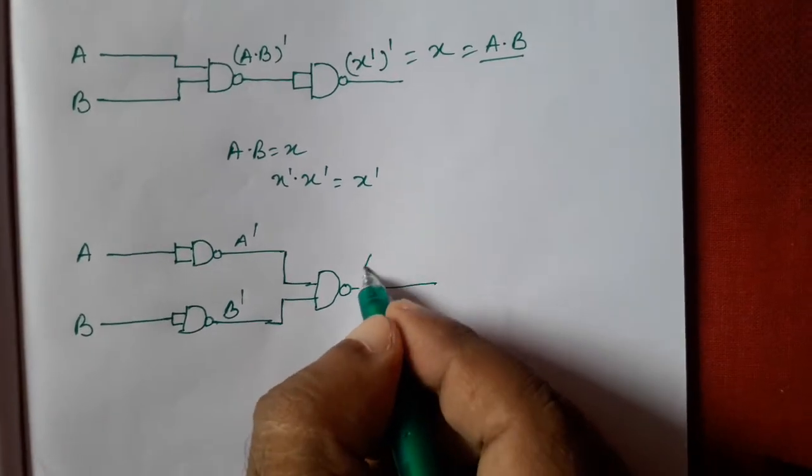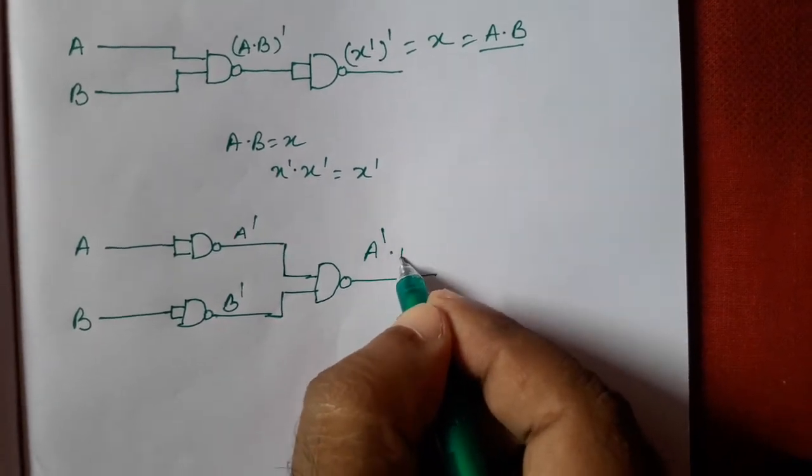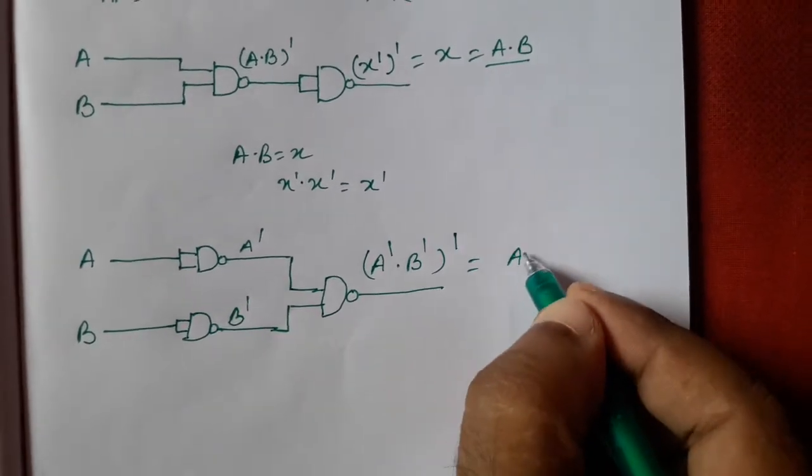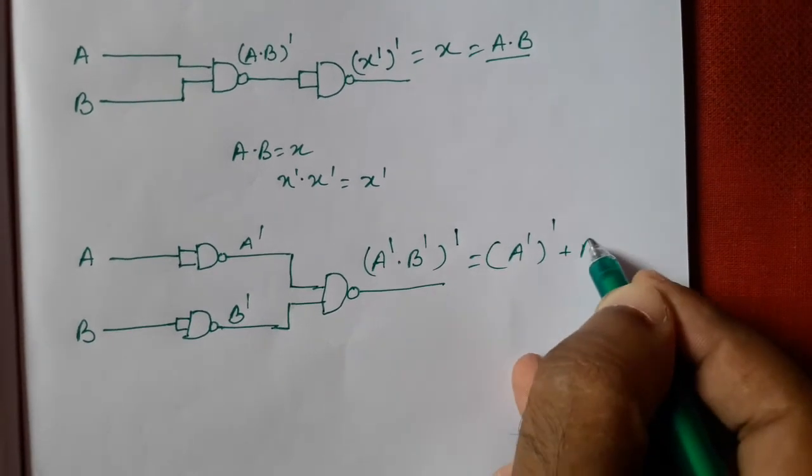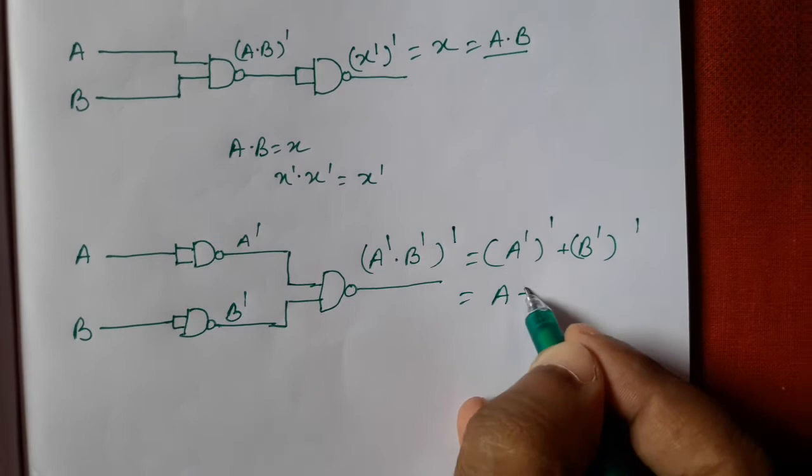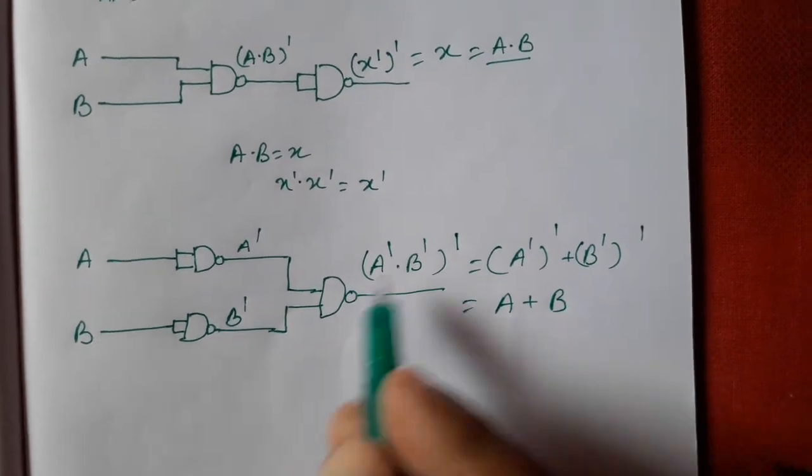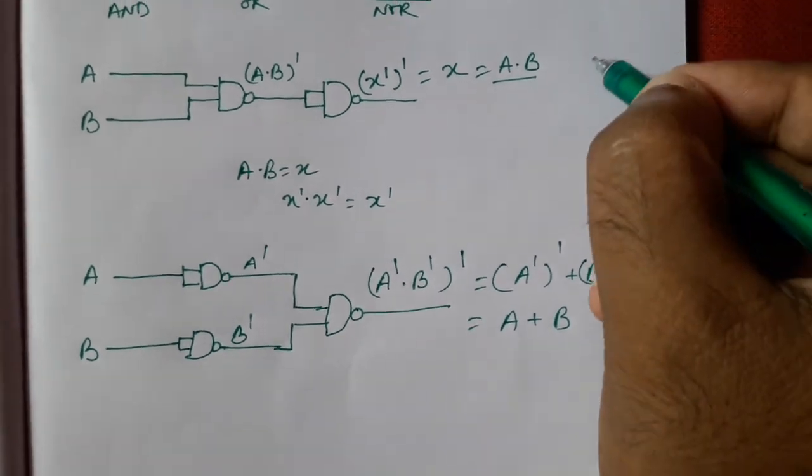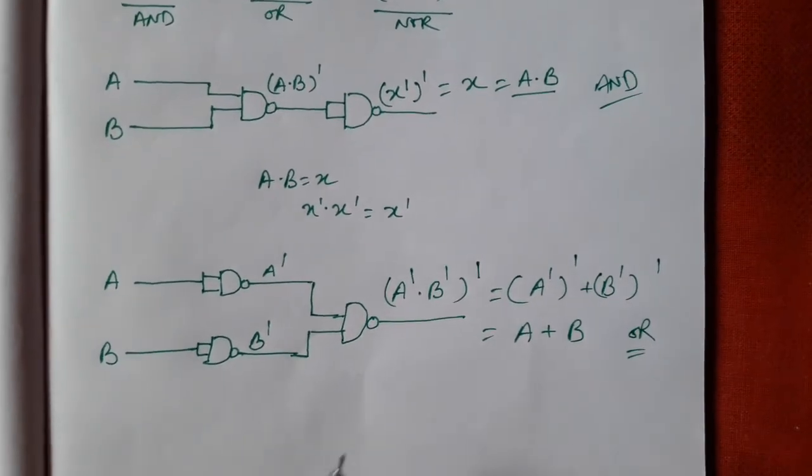So what is coming? A complement into B complement whole complement. So from De Morgan's theorem, A complement whole complement plus B complement whole complement. That means it is A and it is B. So now you can see that this is our OR gate. This is OR gate.